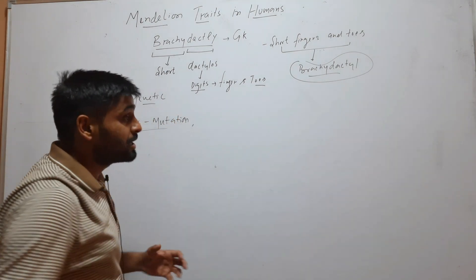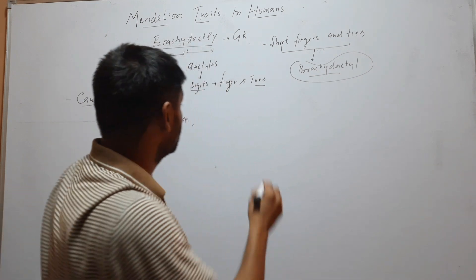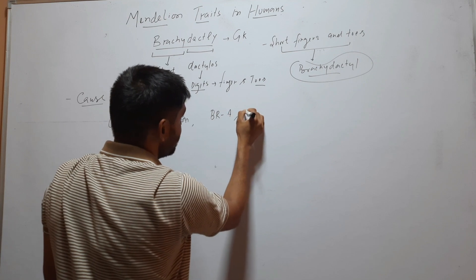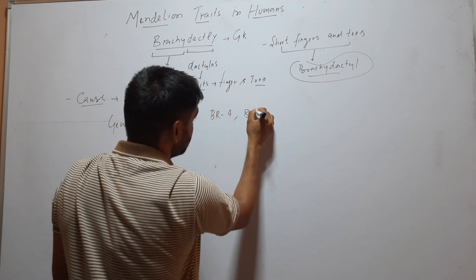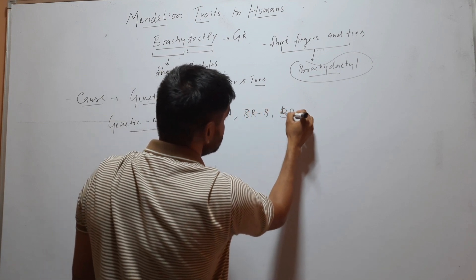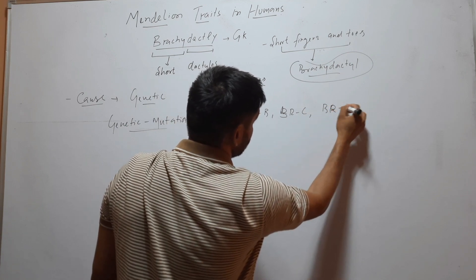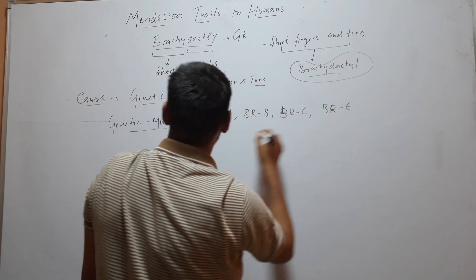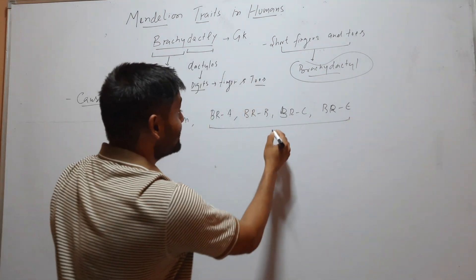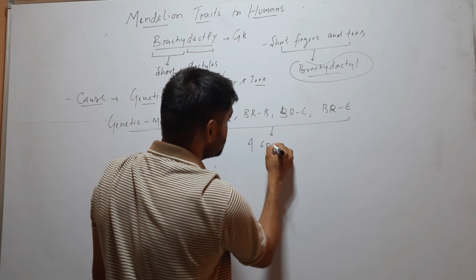In humans, different types of Brachydactyly are found. Brachydactyly is classified as types A, B, C, and E. Each type is caused by a specific gene.